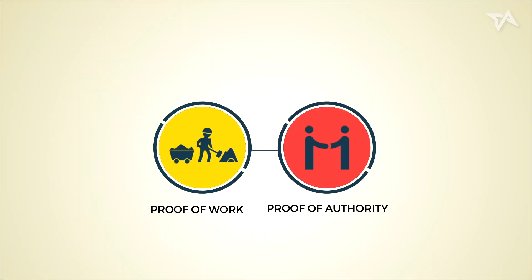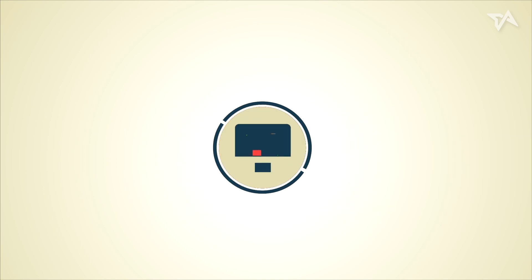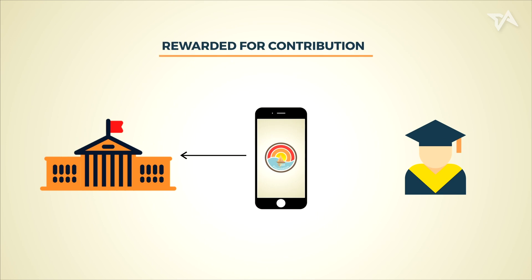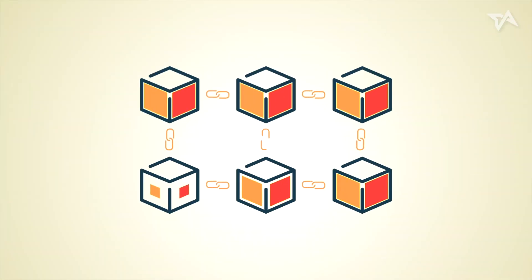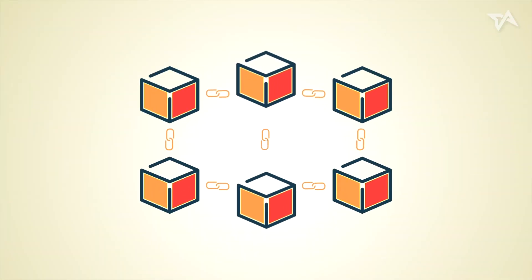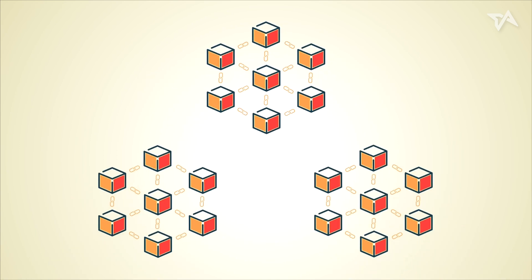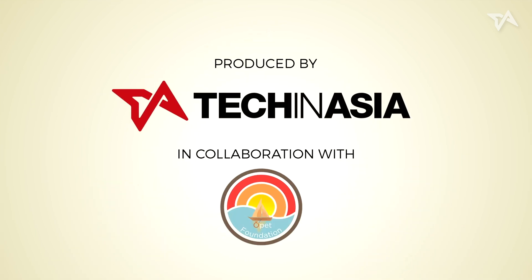By marrying the proof-of-work and proof-of-authority models, Opet Foundation's blockchain solution ensures privacy on students' data while incentivizing both educational institutions and students when they contribute to Opet's platform. With blockchains gaining popularity, it's only a matter of time before we see even more unique hybrid systems created.